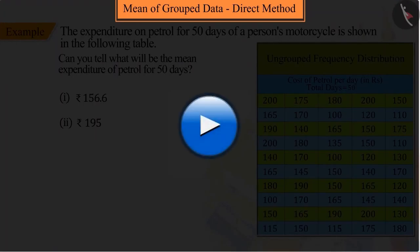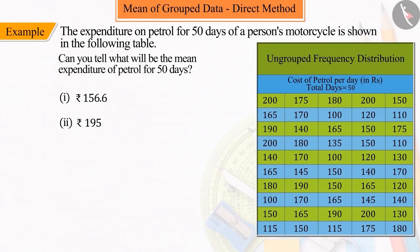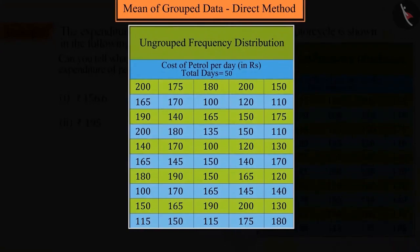Pause the video to solve the question and then match your answer. Let's discuss option 1. From the given ungrouped data table, we can see that the minimum expenditure of petrol is 100 rupees and the maximum expenditure is 200 rupees. Since we have to find the mean,